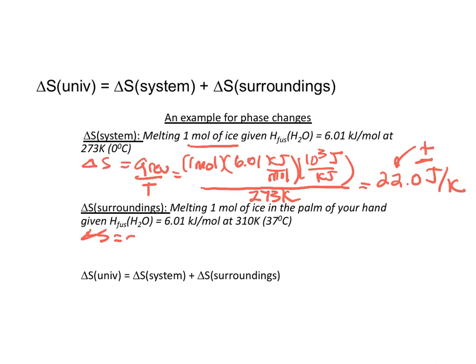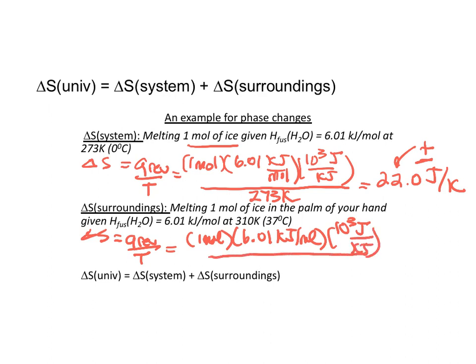It is still the same equation: ΔS is Q reversible divided by temperature. We still have one mole. We still have 6.01 kilojoules for every mole. And again, we must make the conversion of joules per kilojoule.